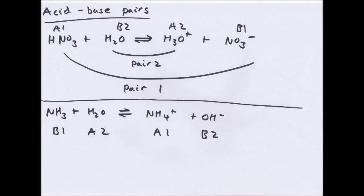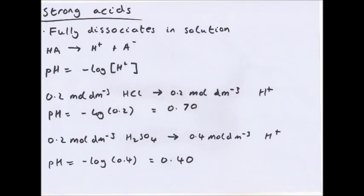Water can act as a base or an acid. In this case it's acting as a base, accepting a proton to become the hydronium ion H₃O+. Another example: ammonia plus water becomes the ammonium ion and OH⁻. Here water acts as an acid because it's releasing a proton, which becomes OH⁻, and OH⁻ can accept a proton.